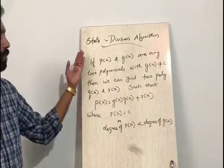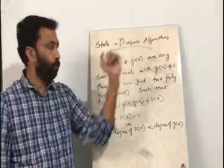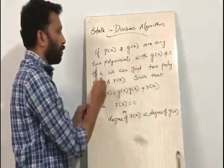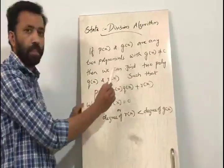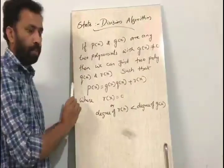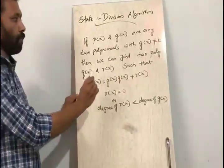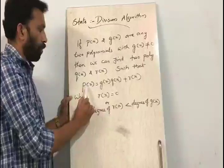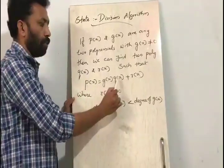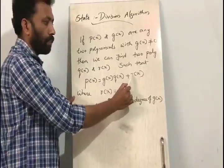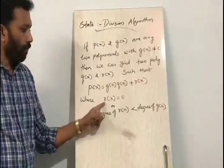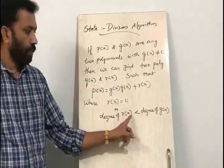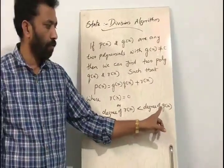Now we are going to state what is the division algorithm for polynomials. If p of x and g of x are any two polynomials with g of x not equal to 0, then we can find two polynomials q of x and r of x such that p of x is equal to g of x into q of x plus r of x, where r of x is equal to 0 or the degree of r of x is less than the degree of g of x.